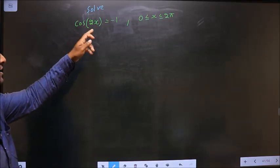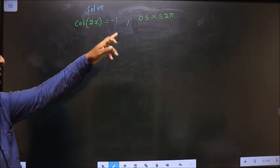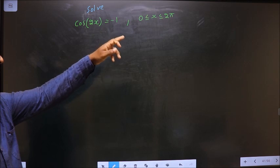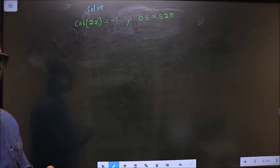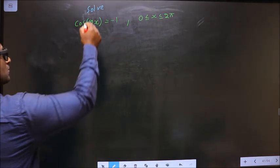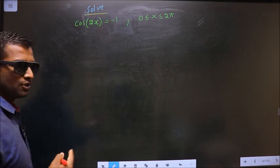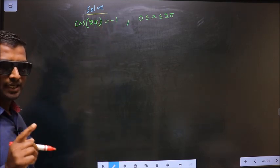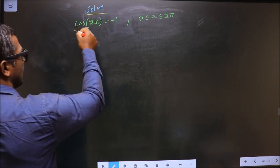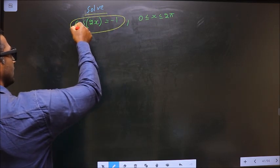Solve cos(2x) = -1 where x lies in the interval 0 to 2π. Here they told you to solve, so you should find the values for x satisfying this equation.